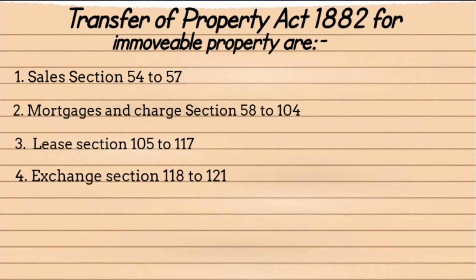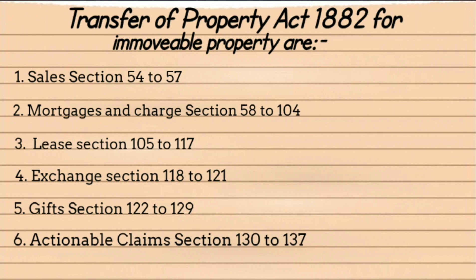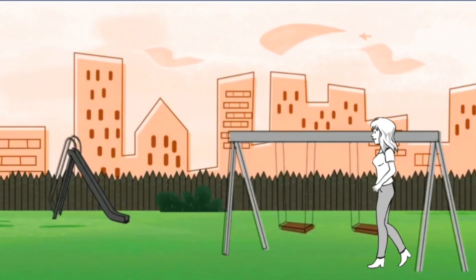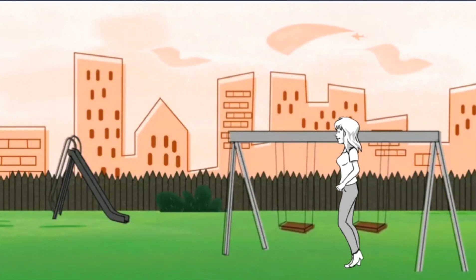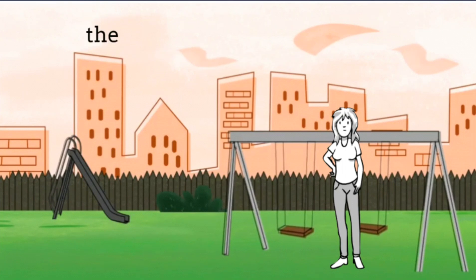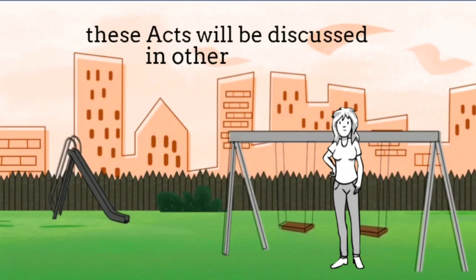Exchange: Sections 118-121. Gifts: Sections 122-129. Actionable Claims: Sections 130-137. Remember, these acts were only for immovable property. These acts will be discussed in other videos.